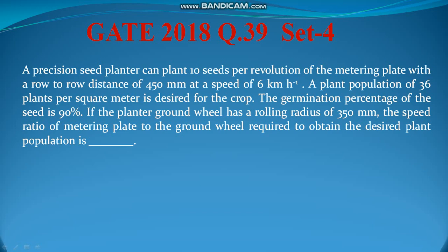This problem is about a Precision Seed Planter. A Precision Seed Planter can plant 10 seeds per revolution of the metering plate with a root-to-root distance of 450 mm at a speed of 6 km per hour.